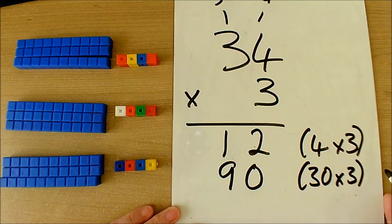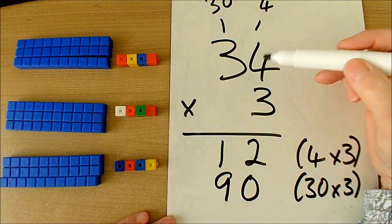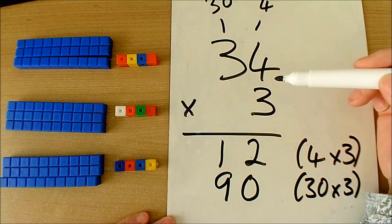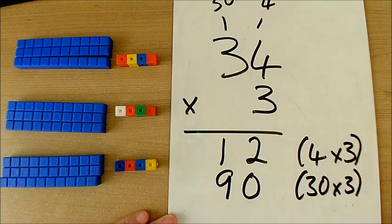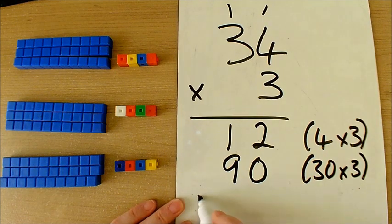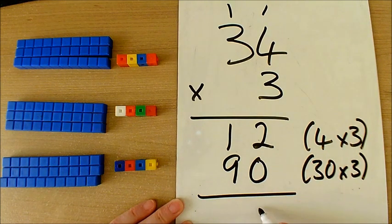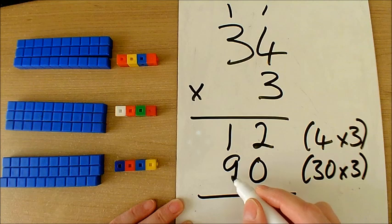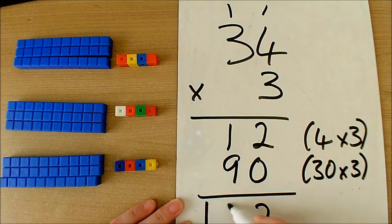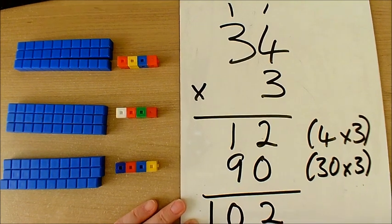Now I've done my 34 as a separate 30 and 4 times 3, I can add my two answers together. 2 plus 0 is 2, 9 plus 1 is 10, the answer comes to 102.